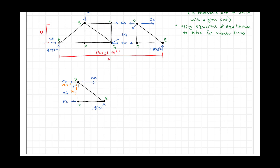I'm going to look at which equations of equilibrium to use — honestly, we look for the easiest one first. When you have a parallel top and bottom chord, you end up with only one unknown vertical force: CD is horizontal, FG is horizontal, so only DG has a vertical component. Summing forces in the Y direction: minus DGY plus 1.875 kips equals zero. Right off the bat we get DGY equal to 1.875 kips.